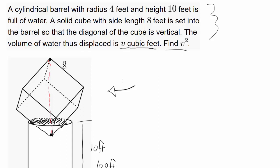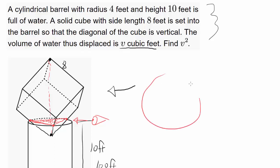We want to find V squared. Let's mark the points of intersection between the cube and the cylinder — connecting them gives an equilateral triangle. Looking at it from the top, you see a circle with the equilateral triangle pressed inside it. We know the radius of the circle is 4 feet.